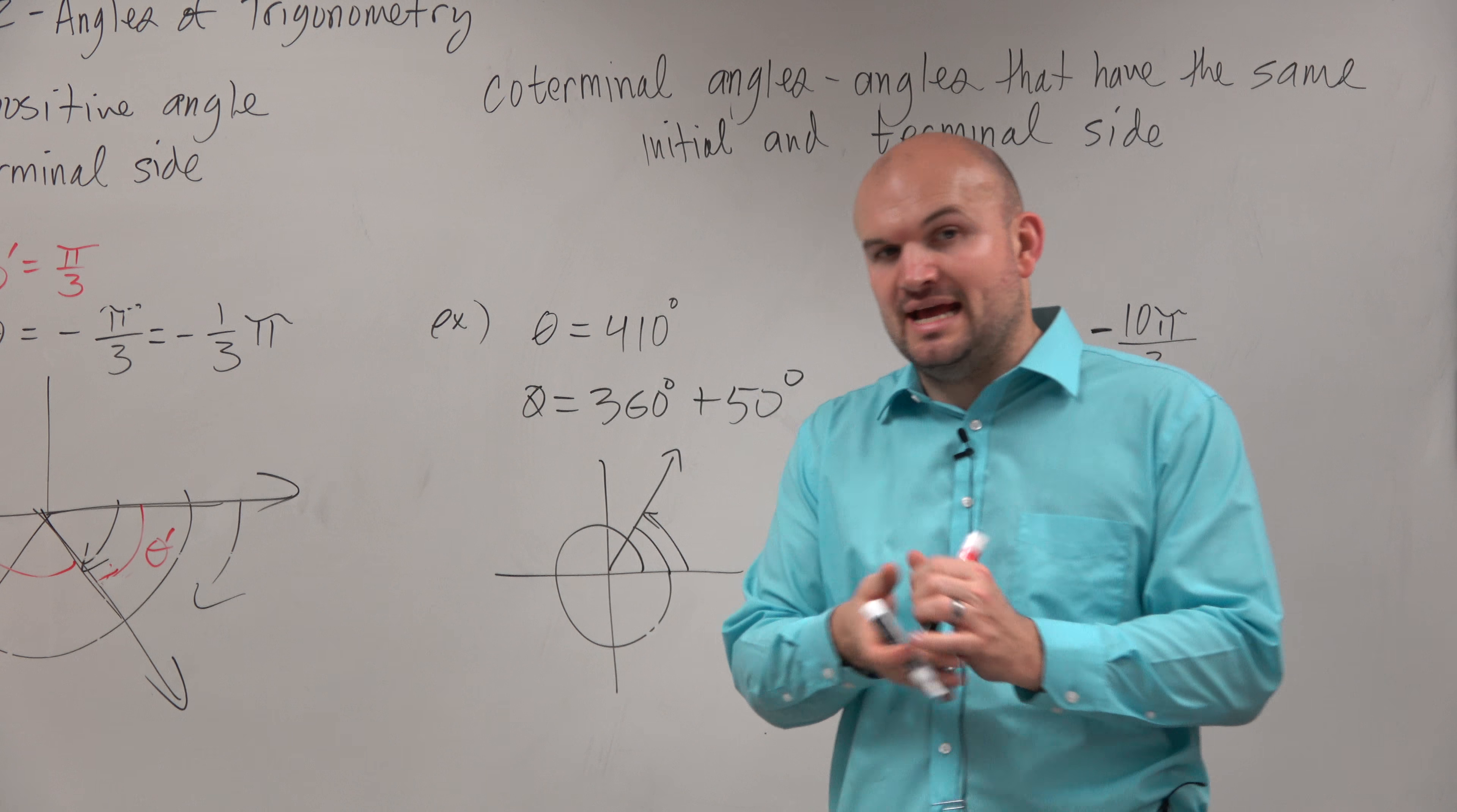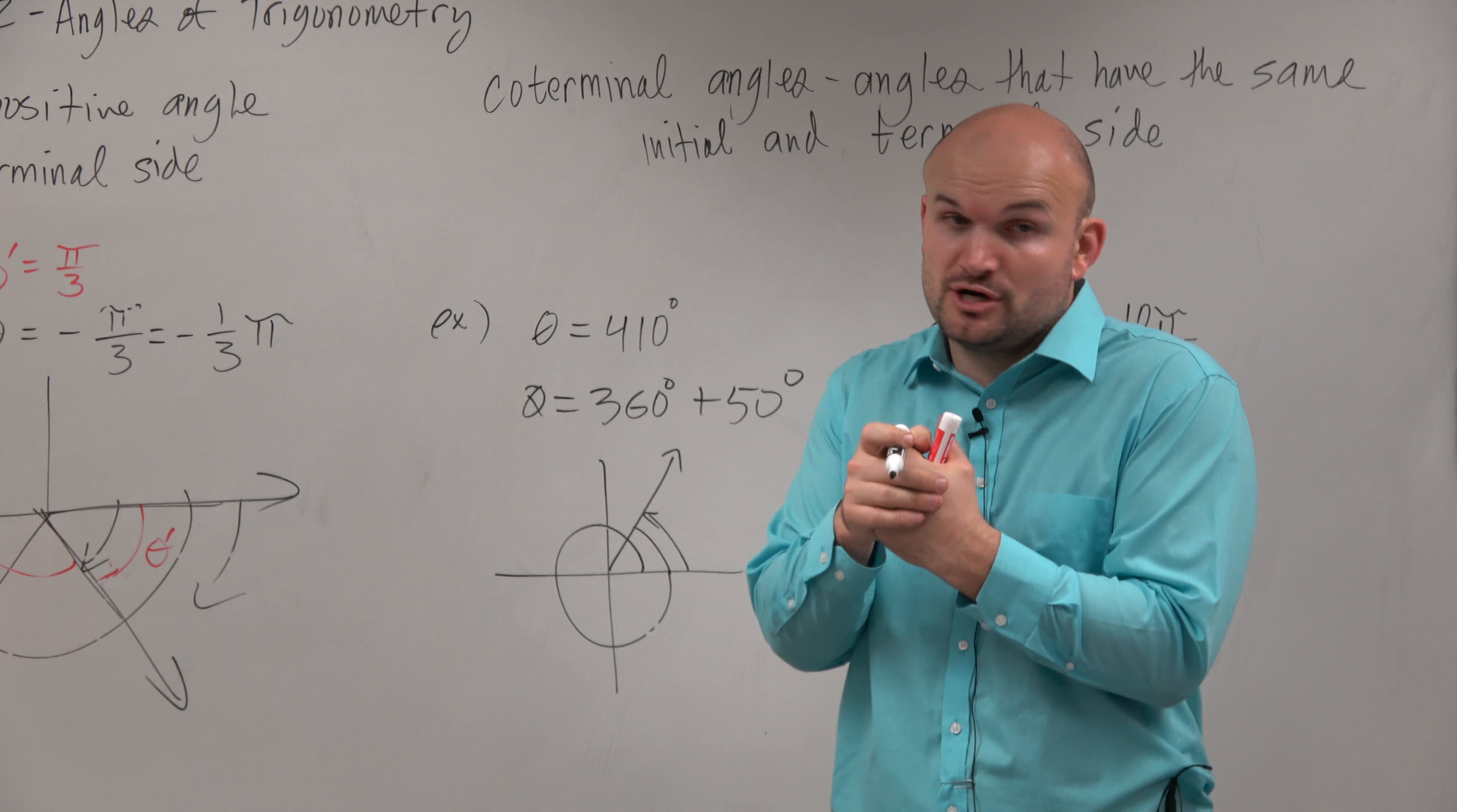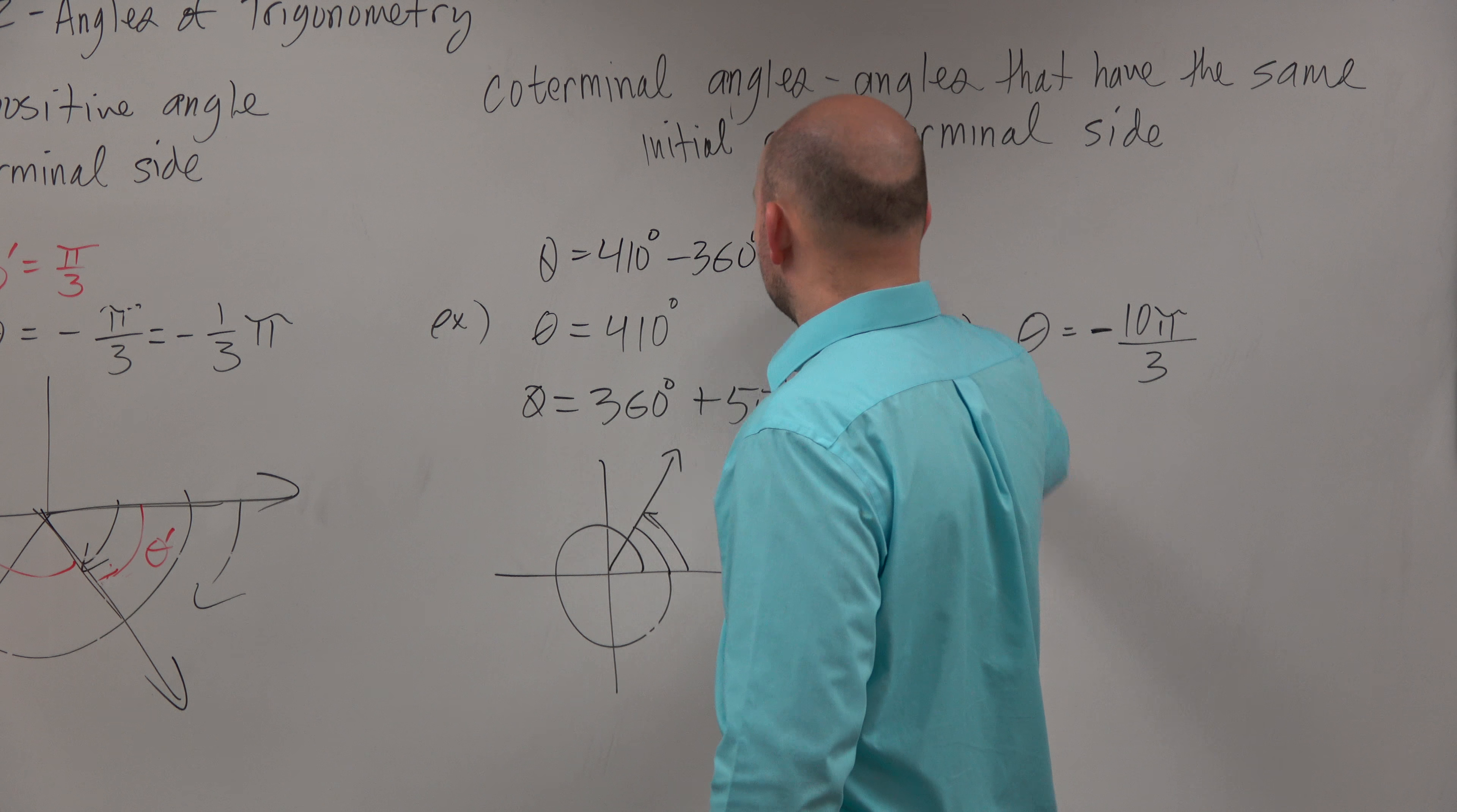So if I want to find a positive acute angle, if I want to find the acute angle that's coterminal, what I would need to do is just subtract 360 degrees. And that gives me 50 degrees.